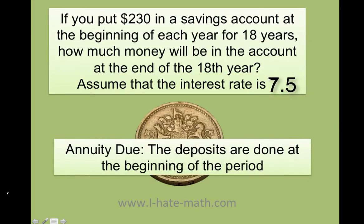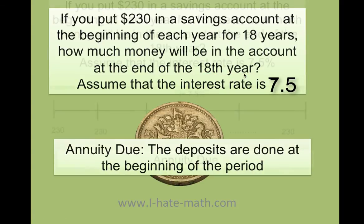This is what we call an annuity due because the deposits are done at the beginning of the period. Basically you're making a payment at the beginning for 18 years. So let's see what happens.